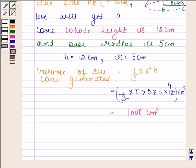Hence, the volume of the cone generated is 100π cm³. This is our required answer. This completes the session.